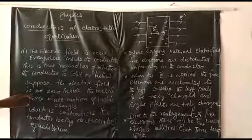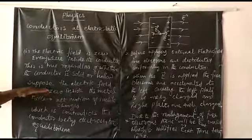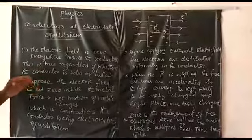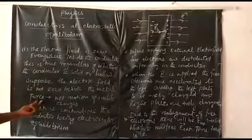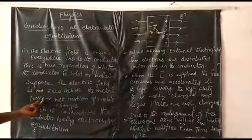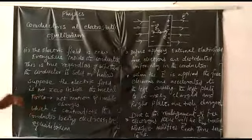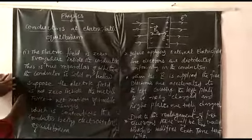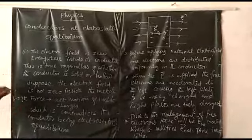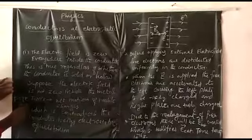Suppose the electric field is not zero inside the metallic conductor. If the electric field inside the conductor is not equal to zero, that means the electric field is present inside the conductor. So the electrons experience a force: F is equal to Q into E. The force is experienced by each individual electron, where Q is the charge of the electron.